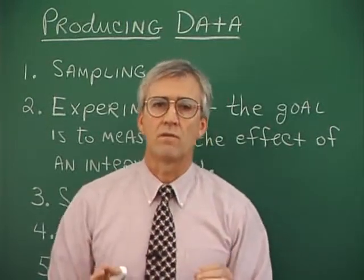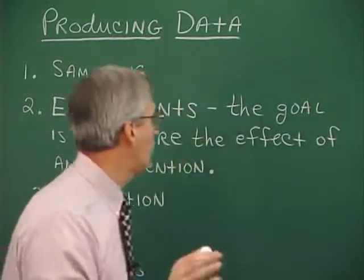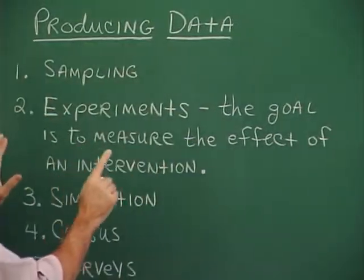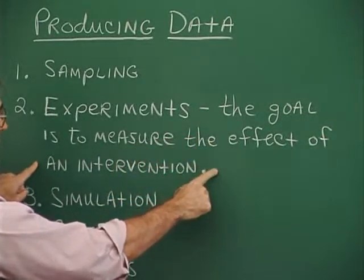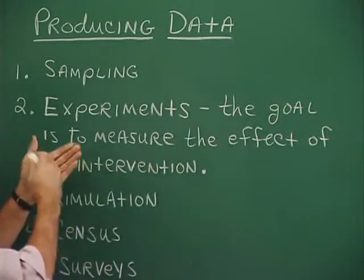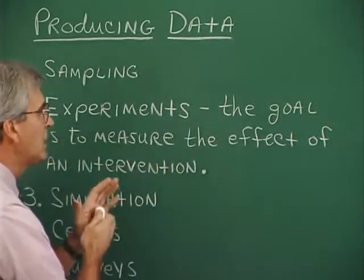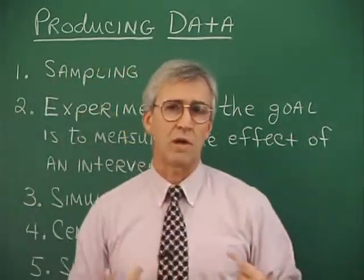Experimentation, however, will disrupt a portion of the population. The goal in experiments is to measure the effect of some kind of intervention, and in order to measure the effect of an intervention on the whole population, generally you need to intervene into a portion of that population.